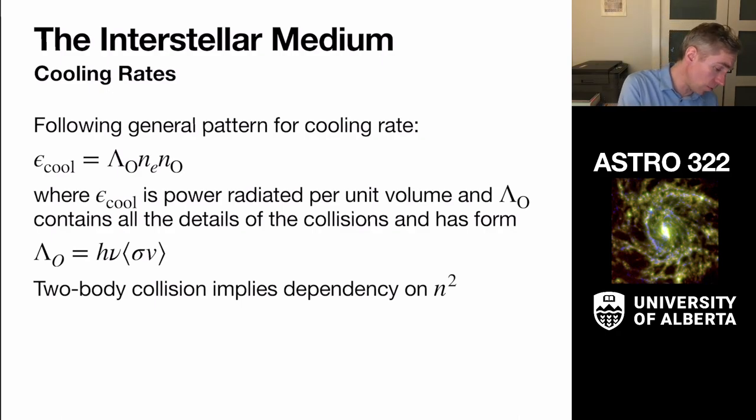And in fact, we're going to turn this whole thing lambda zero into just a number. We don't want to actually know too much about it, but we should know roughly how it behaves. So first, since this is a two-body collision, that implies this dependency on the density of things squared.